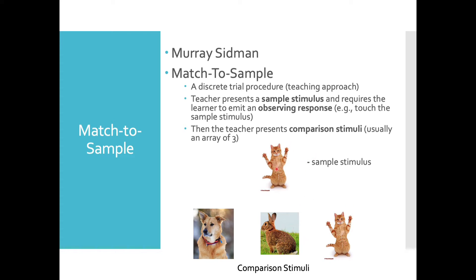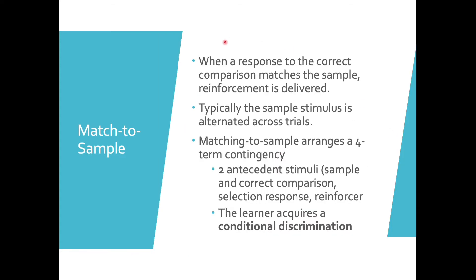Across trials, the comparison stimuli are alternated in a left-to-right or quasi-random format. It's recommended that each of the comparisons also serves as the sample stimulus across trials. So trial one might be a sample of a cat, pointing to cat; trial two might be the sample of the rabbit, pointing to rabbit; trial three might be the sample of the dog — a quasi-random format of alternating samples. When a correct response occurs, reinforcement is delivered, and the sample is alternated across trials.